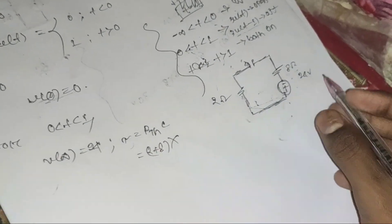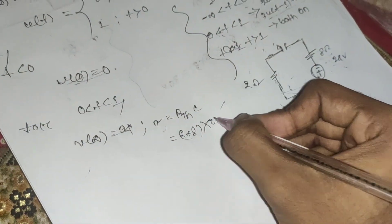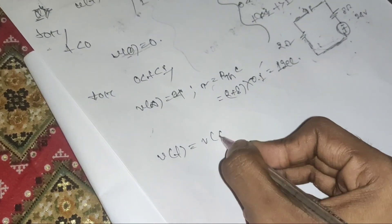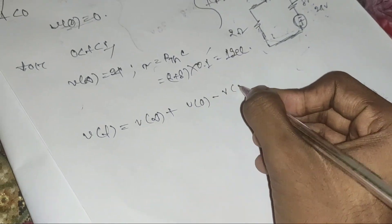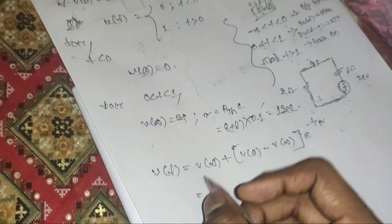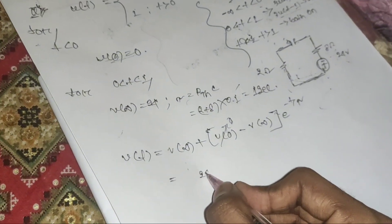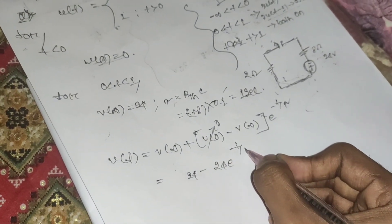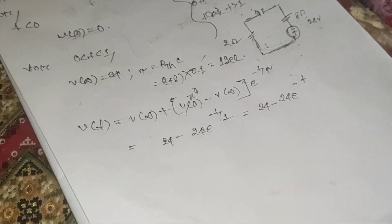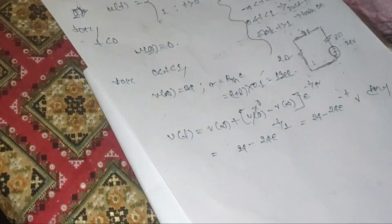With v₀ = 0, the equation for 0 < t < 1 is v(t) = 24 − 24·e^(−t) volts.